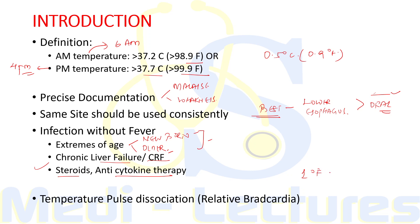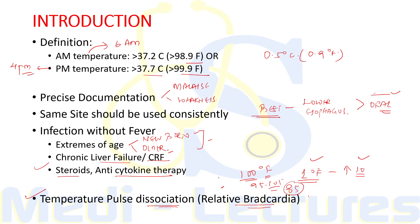Normally, with every one degree Fahrenheit increase in body temperature, the pulse rate also increases by 10. But if temperature is increasing and pulse rate is not increasing in proportion, this is termed as temperature-pulse dissociation, also called relative bradycardia. For example, at 100°F, if the baseline pulse was 70, the pulse rate should increase to around 95–105, but if it is still 85, that is relative bradycardia. Conditions causing this include typhoid, brucellosis, leptospirosis, factitious fever, and drug-induced fever.